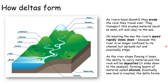Here's a slightly more advanced version. The rivers head downhill, they erode the rock they travel over. On meeting the sea, the river's speed rapidly slows down, and therefore the river will lose the ability to carry material, and the rock will be dropped. The dropped rock is known as alluvium, and eventually new land is created — this is our delta forming.